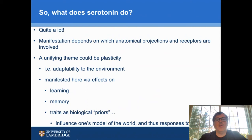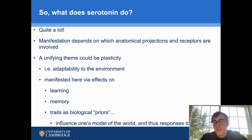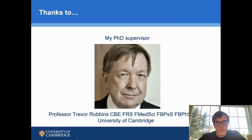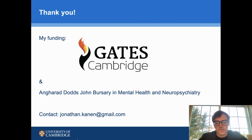So what does serotonin do? Clearly quite a lot. The manifestation of what serotonin does likely depends a whole lot on which anatomical projections and receptors are involved. A unifying theme could be plasticity — in other words, adaptability to the environment. This is manifested in my talk via effects of serotonin on learning and memory, and considering traits as possible biological priors that we enter the world with, that influence our interactions and responses to it. Thanks to my PhD supervisor, Professor Trevor Robbins, and thanks for listening.